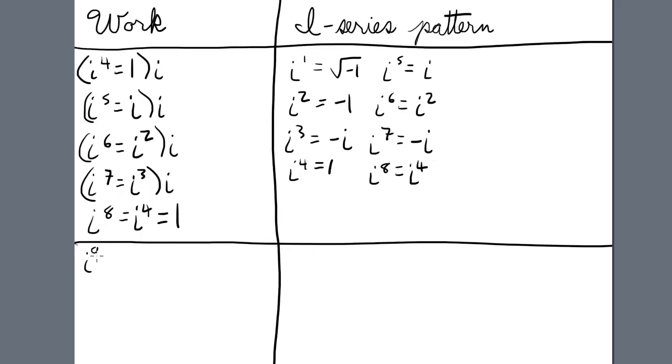So let's take i to the ninth, for example. We're going to divide the power of i by four. We have two, two times four is eight, remainder one. So that means i to the ninth equals i to the first, which is the remainder.